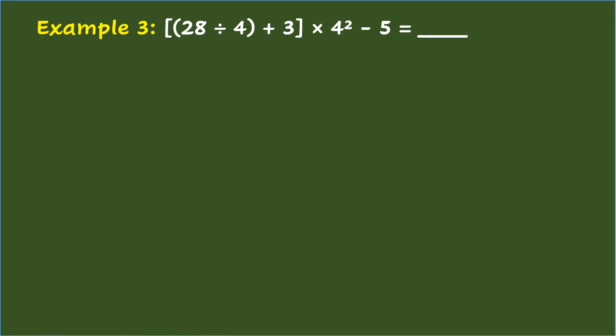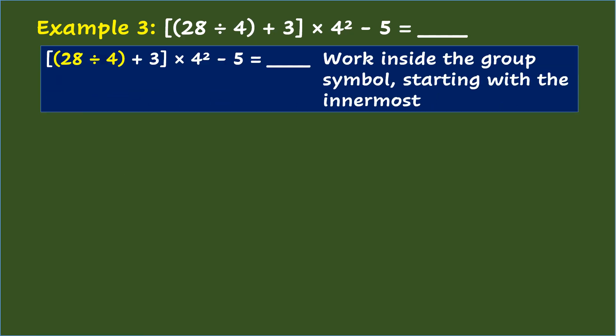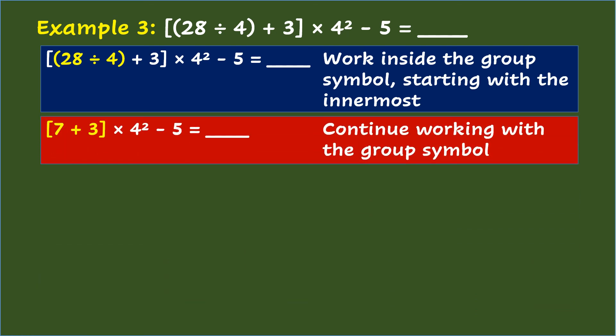Example 3: [(28 ÷ 4) + 3] × 4² - 5 equals blank. Following the GEMDAS Rule, first step is to work inside the group symbol, starting with the innermost. So that's 28 divided by 4 equals 7. Second is to continue working with the group symbol. So that's 7 plus 3 equals 10.